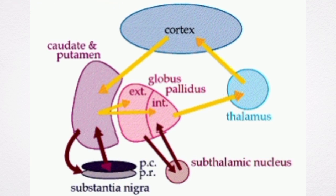The subthalamic nucleus is usually situated lateral to the red nucleus and dorsal to the substantia nigra.